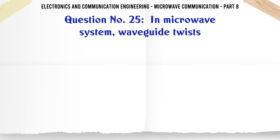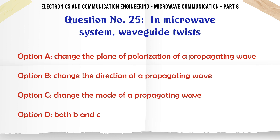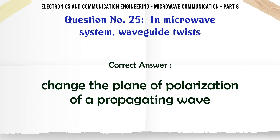In a microwave system, waveguide twists — A. Change the plane of polarization of a propagating wave, B. Change the direction of a propagating wave, C. Change the mode of a propagating wave, D. Both B and C. The correct answer is: changed the plane of polarization of a propagating wave.